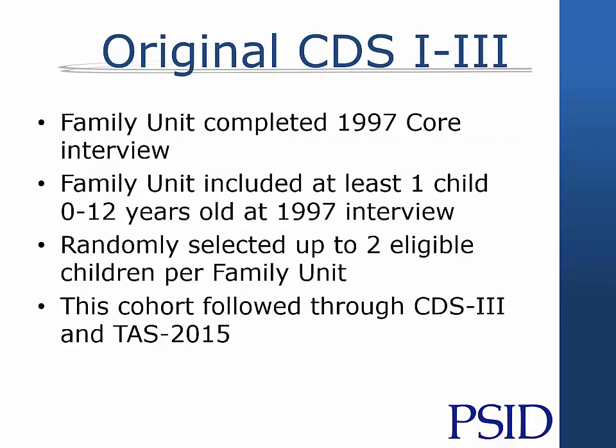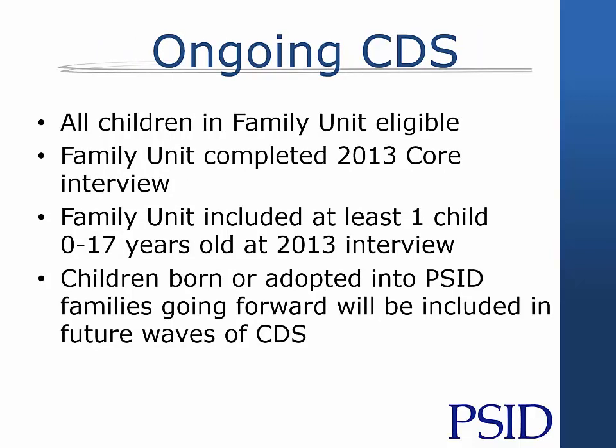The original CDS began in 1997 with families selected from those who completed a core family interview in that year. Selected families included at least one child who had been born to or adopted by a PSID sample member and who was 0 to 12 years old in 1997. Up to two eligible children per family were randomly selected to participate. These children were followed in up to two subsequent waves of the CDS and in the Transition into Adulthood Supplement through 2015. The design of the ongoing CDS, which began in 2014, differs from the original CDS in three significant respects. First, all children born or adopted into PSID families since 1997 were eligible to be included in the 2014 wave if their family completed the 2013 core interview. This differs from the original CDS, where no more than two eligible children per family were randomly selected to participate.